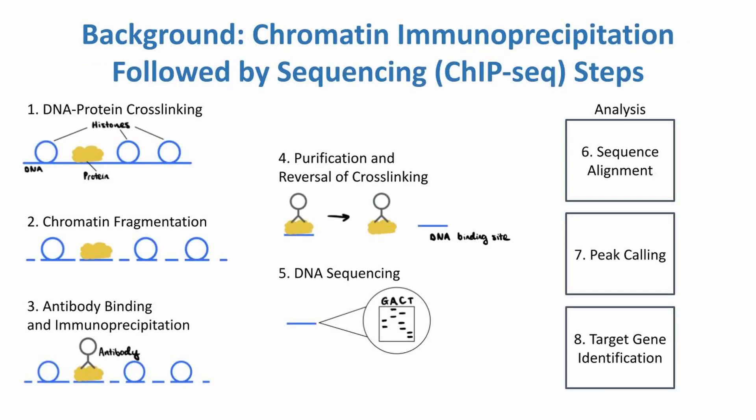When performing ChIP-seq experiments, we follow these steps: DNA protein crosslinking, chromatin fragmentation, antibody binding and immunoprecipitation, purification and reversal of crosslinking, DNA sequencing, sequence alignment, peak calling, and finally, target gene identification.